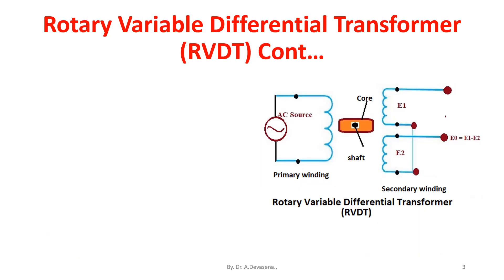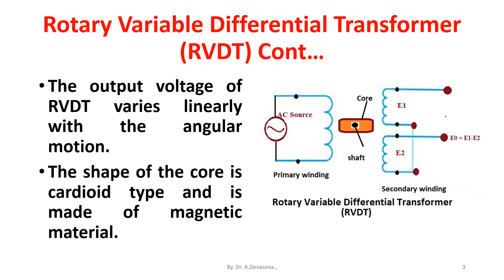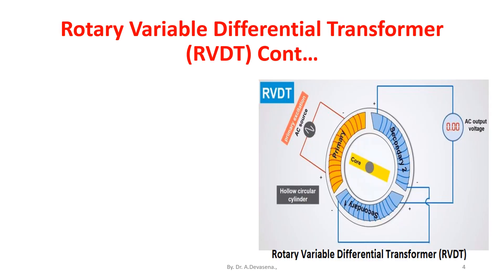The output voltage of RVDT varies linearly with angular motion. The shape of the core is cardioid type and is made of magnetic material. This shape is chosen to produce a linear output over a specified angular motion.